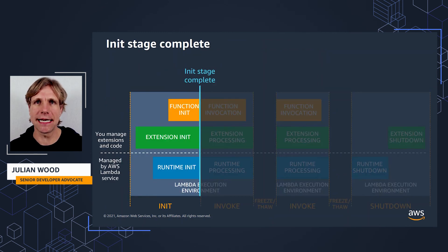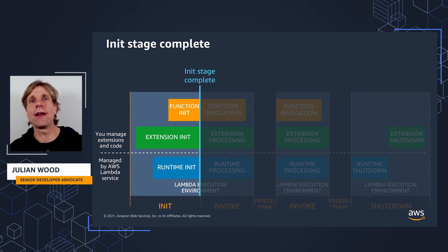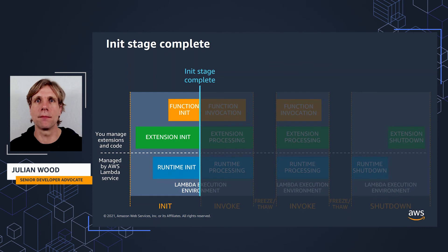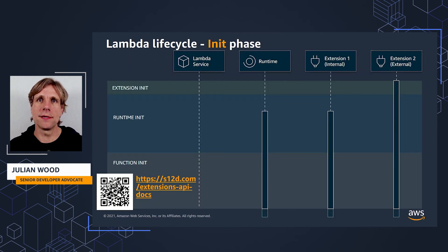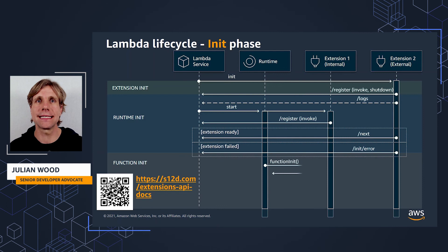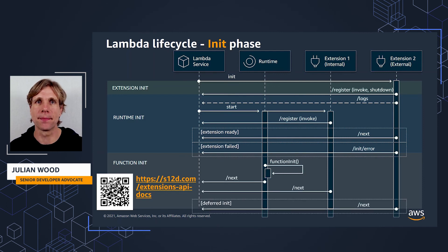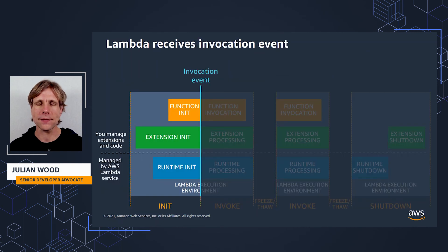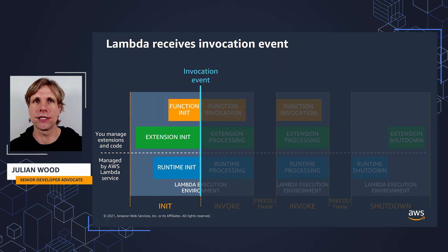The initialization phase is now complete. The init phase completes after the runtime and each registered extension signal they are ready by sending /next API requests. The function has also initialized all setup tasks that complete before the function code runs. The Lambda documentation — linked here — has a handy flow diagram for init, showing how the three components — extension, runtime, and function — communicate during init. You read it top to bottom following the arrows. As init is complete, Lambda is ready to progress to the invoke stage, where Lambda sends an invoke event to the runtime and to each extension registered for the invoke event, and then runs the function handler itself.